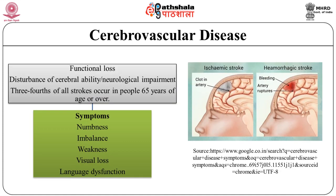Cerebrovascular disease: stroke is the rapidly developing functional loss and disturbance of cerebral ability characterized by numbness, imbalance, weakness, visual loss and language dysfunction. Strokes are more common in older people — almost three-fourths of all strokes occur in people 65 years of age or over. Aged people who have had a stroke are at highest risk of death in the weeks after the event, and depending on type, severity, age, comorbidity and effectiveness of treatment, between 20 to 50 percent die within the first month.